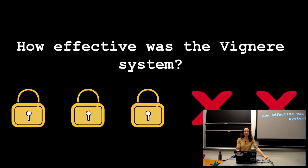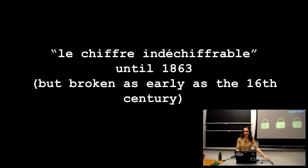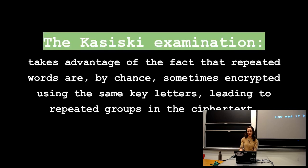So how effective was Vigenère's system? Again, pretty effective. I'm going to give it three out of five locks. It was called, and I really don't have any kind of French accent, but it's called le chiffre indéchiffrable or something like that, which means the indecipherable cipher until the year 1863. But in practice, they think that people who were good at crypto analysis could probably solve it as early as the 16th century. So how did they go about breaking it? They used something called the Kasiski examination, which takes advantage of the fact that repeated words are by chance sometimes going to be encrypted using the same key letters.